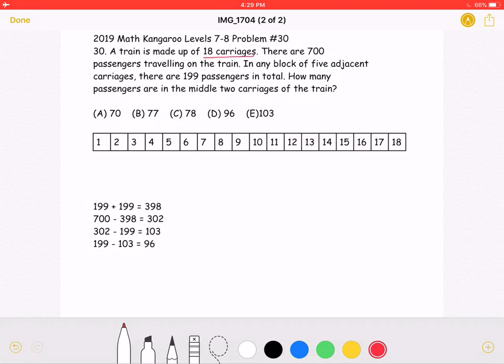It also states that in any block of 5 adjacent carriages, there are 199 passengers in total. And that there are 700 passengers traveling on the train. So let's start by making a few blocks of 5.